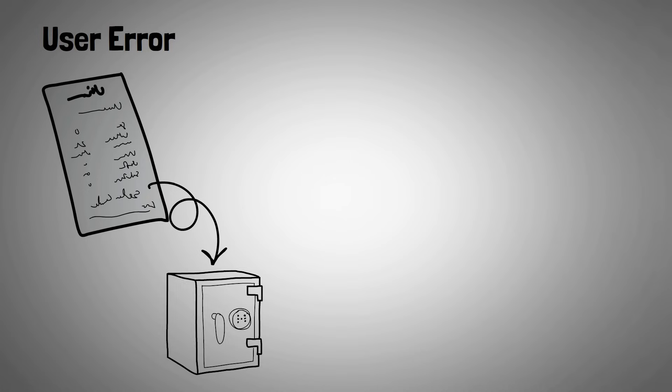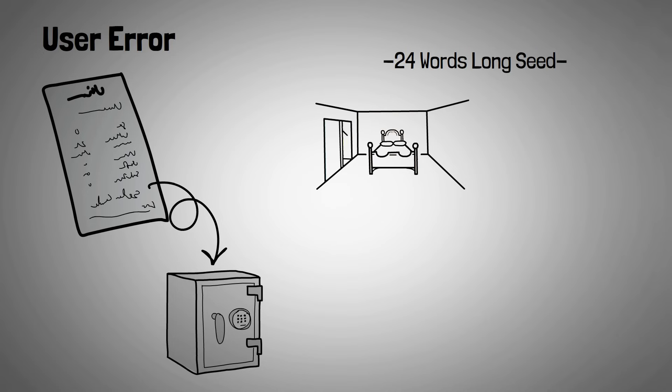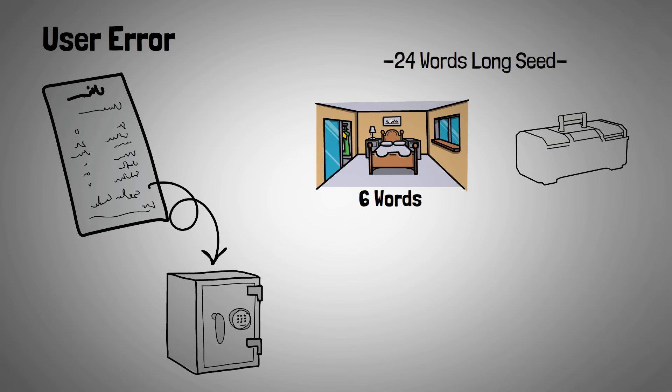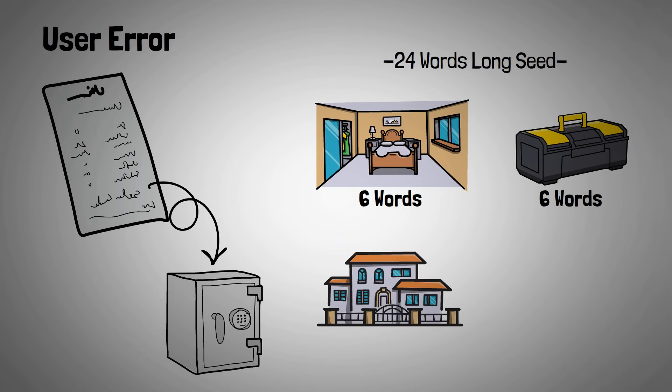The most common vulnerability is user error. Most attacks involve someone typing in their seed phrase into an online website, which you should never do, or someone writing down their seed phrase in an area where other people have access. To combat this, some people take their seed phrase and split it up into multiple different sections where they will hide each section of their seed phrase at a different point. One at home, maybe one in a safety deposit box, maybe one with a trusted family member, maybe one buried in a time capsule in the woods.